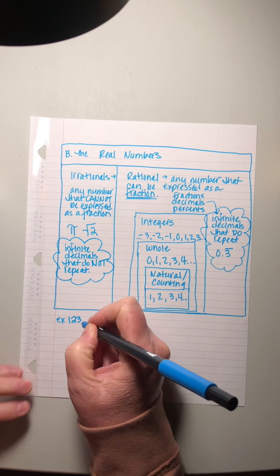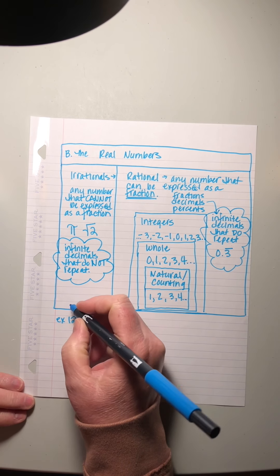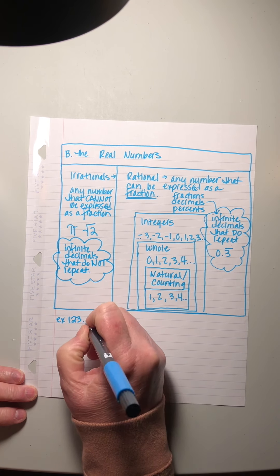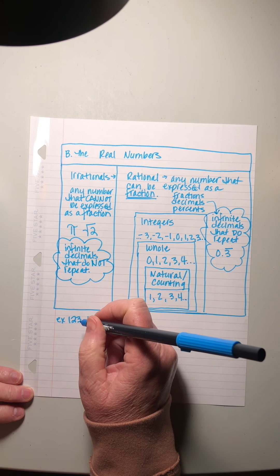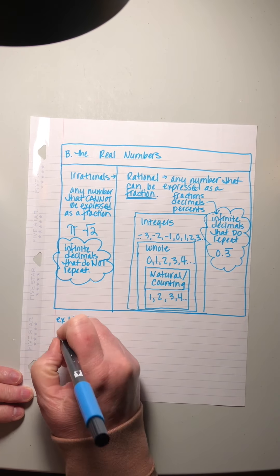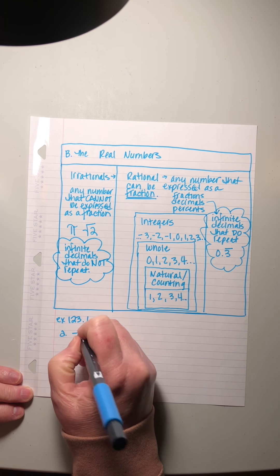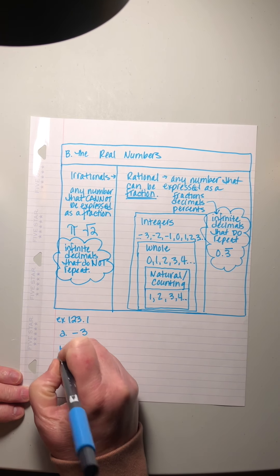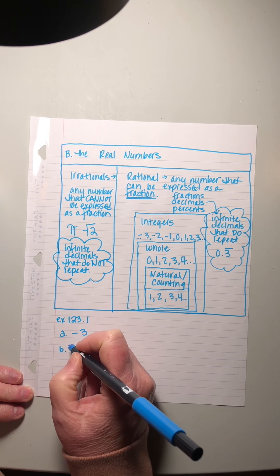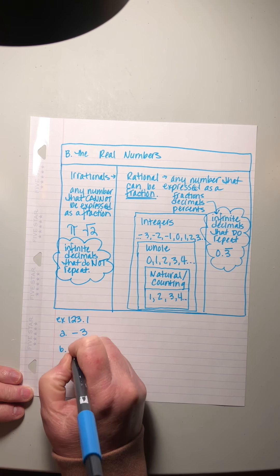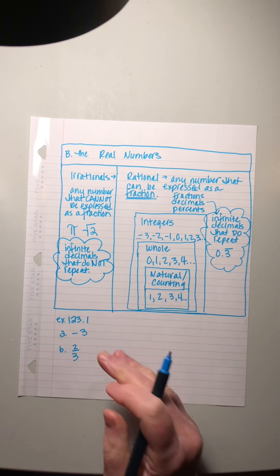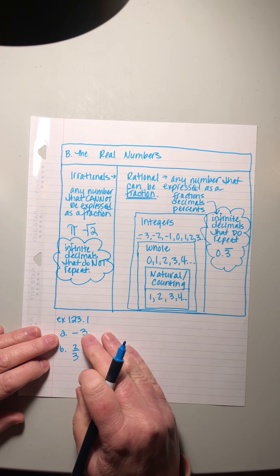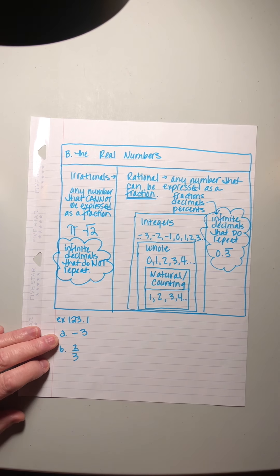What do the problems look like in this? This is the question: to which number sets discussed in this lesson do A) negative three and B) two over three belong? So in other words, what we're supposed to be doing is saying, which sets would include negative three?